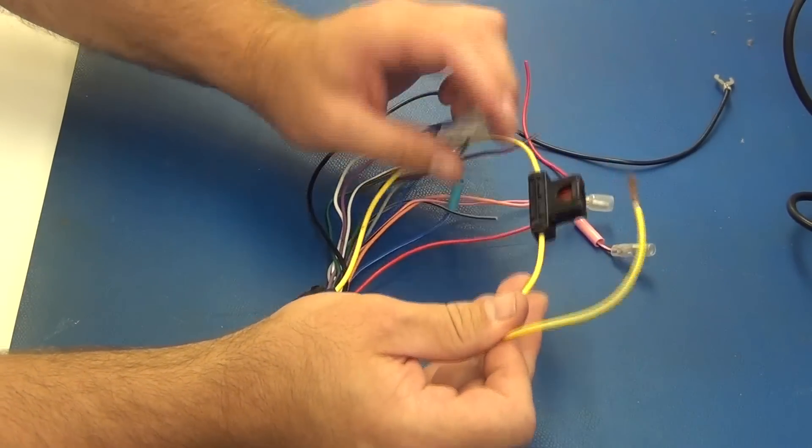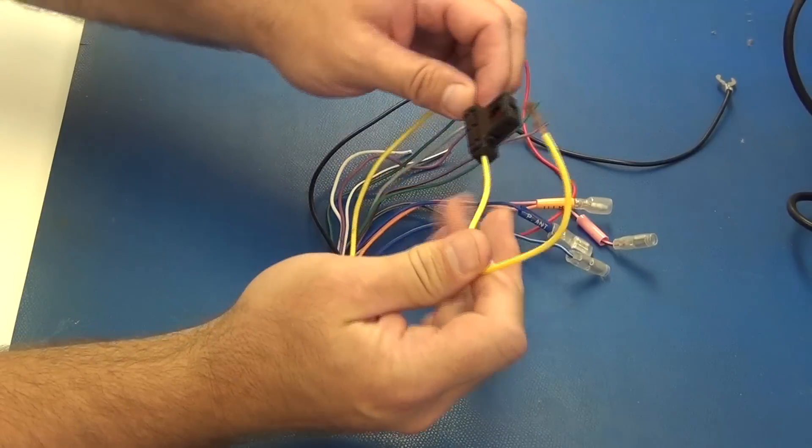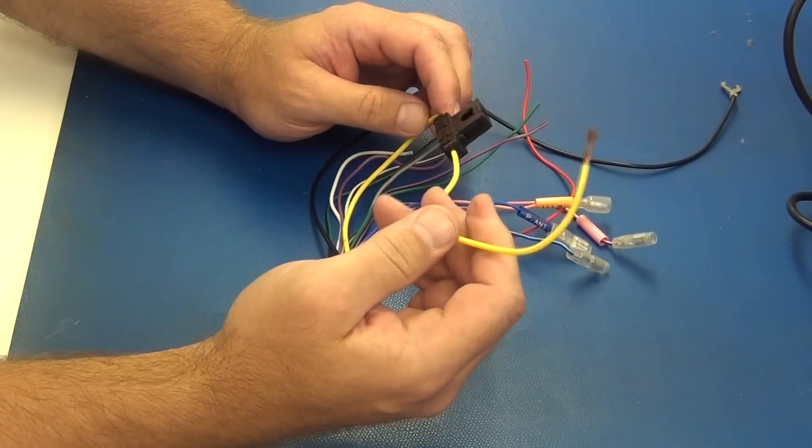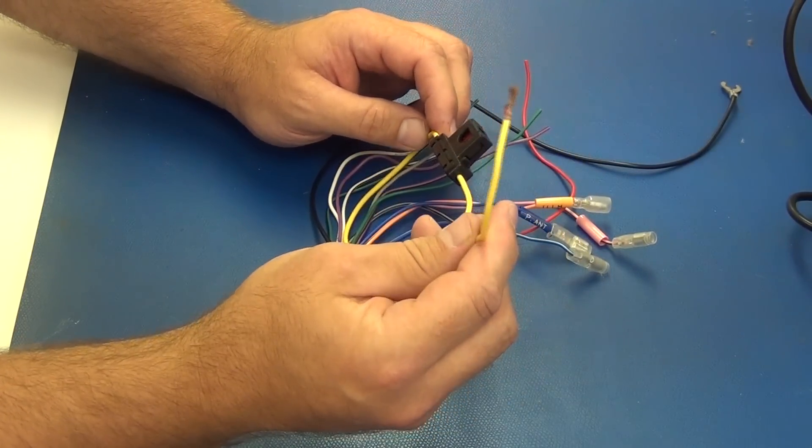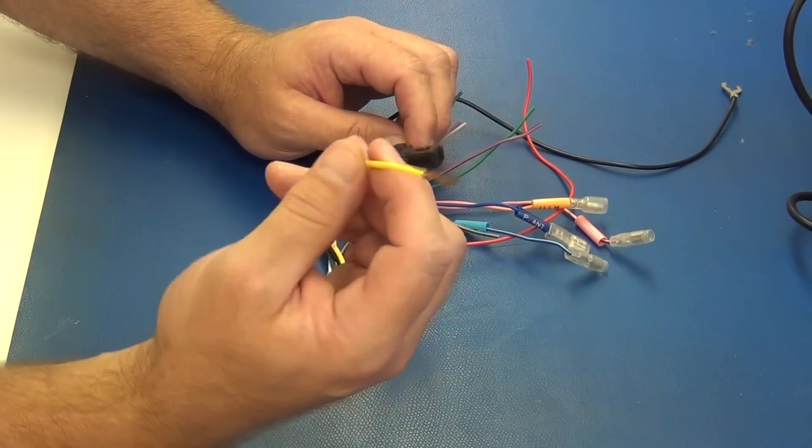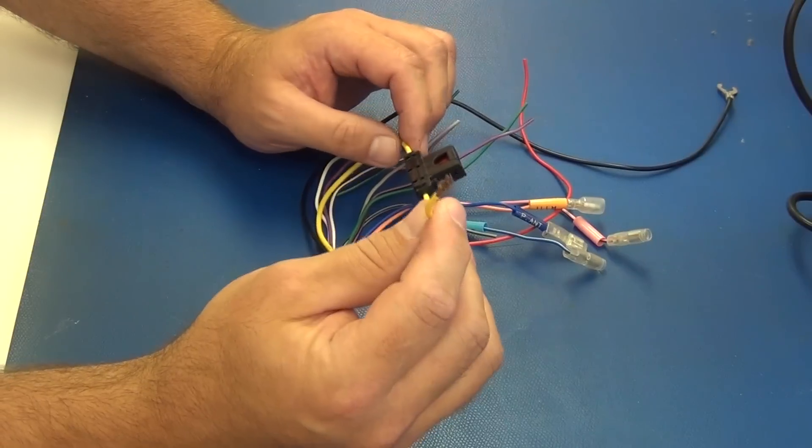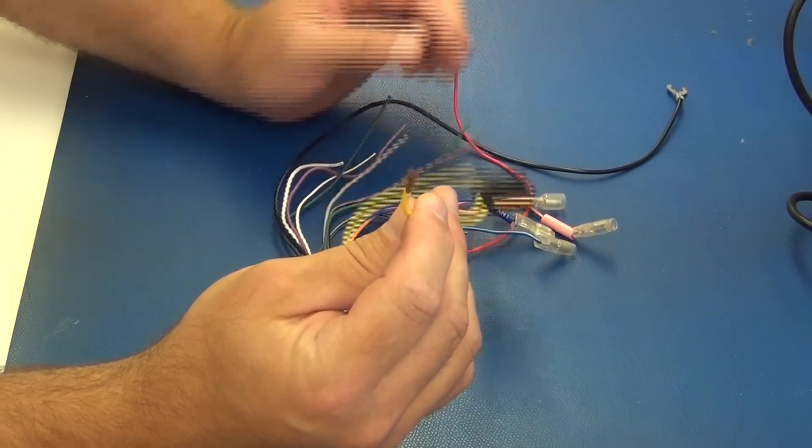The next one is yellow. Battery power. This is a full-time power. We need to have this for two reasons. First of all, it's a heavier wire because it has to power the internal amplifier. But another thing is it remembers all your presets, memories, your clock time, and things like that. If you don't have this, every time you turn the vehicle on, it'll be like the car stereo was just installed. There will be no presets, no clock set, things like that.